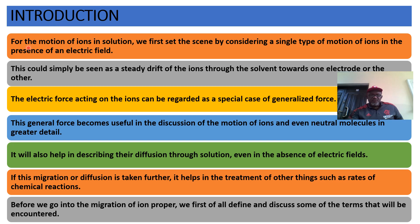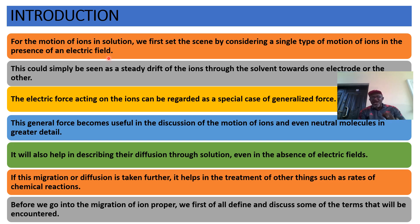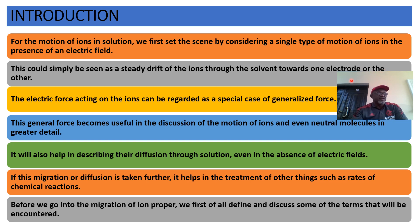Introduction. The motion of ions in solution — for us to look at this motion of ions in solution, we first set the scene by considering a single type of motion of ions in the presence of an electric field. When you have an ion and an electric field is applied, the ion will move as a result of the force of that electric field towards an opposite pole. This could simply be seen as a steady drift of ions through the solvent towards one electrode or the other. Depending on the ion in solution — positive and negative ions, that is the anions and cations — they move under the influence of this force to opposite electrodes.